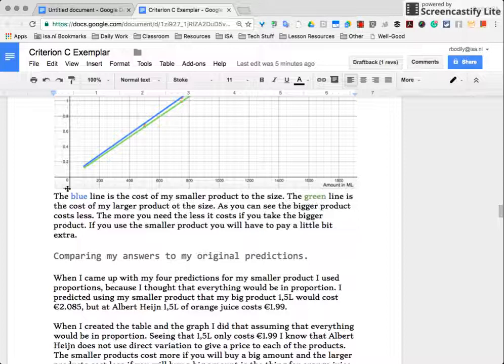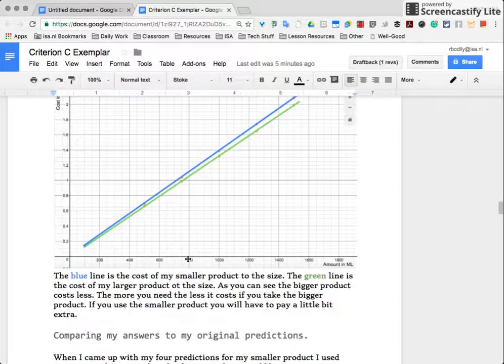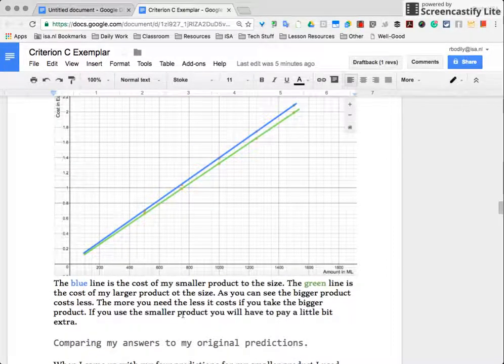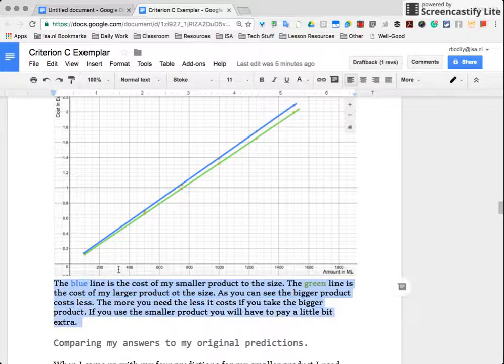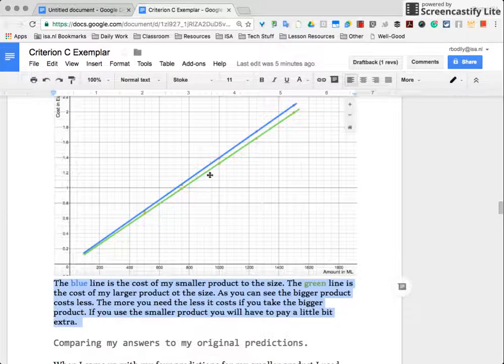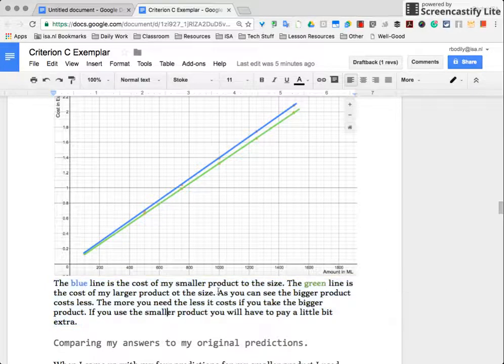Now he's going to talk about the graph. 'The blue line is the cost of my smaller product to the size. The green line is the cost of my larger product to the size.' So describing what is represented in the graph, and then seeing what is able to be compared in the graph, is also good.